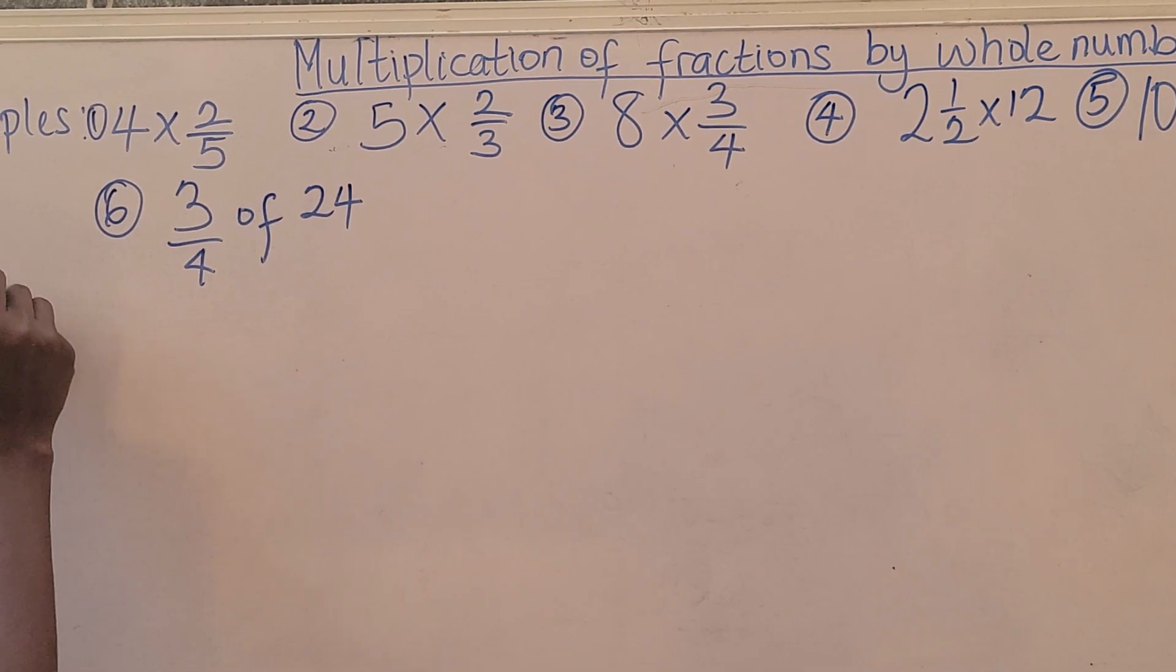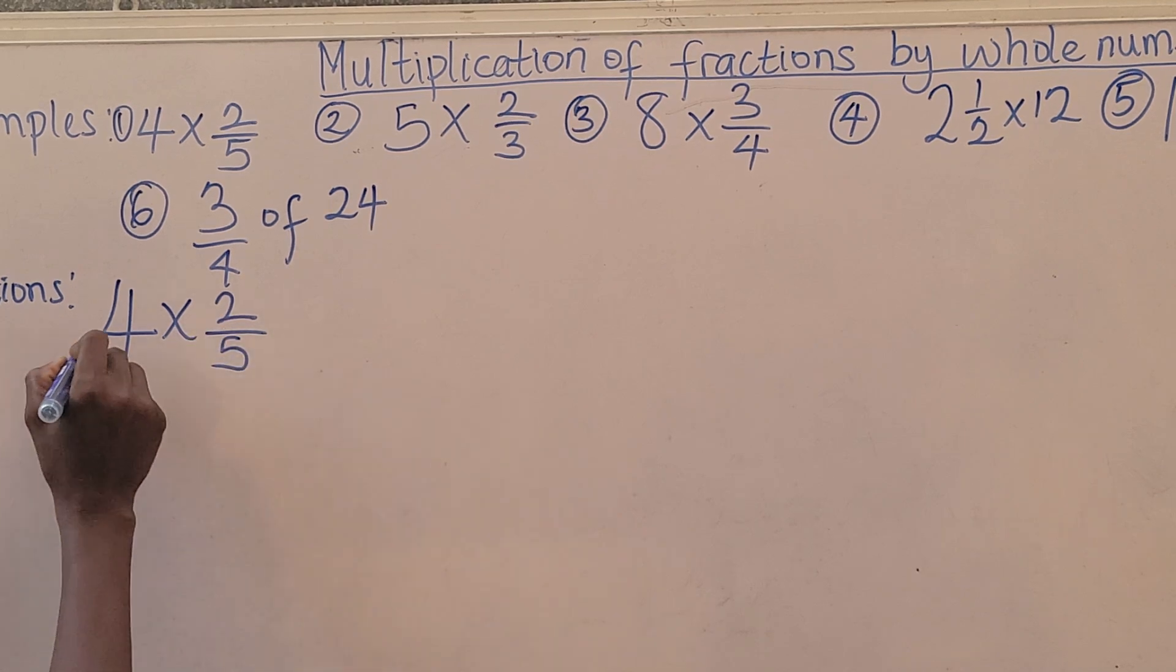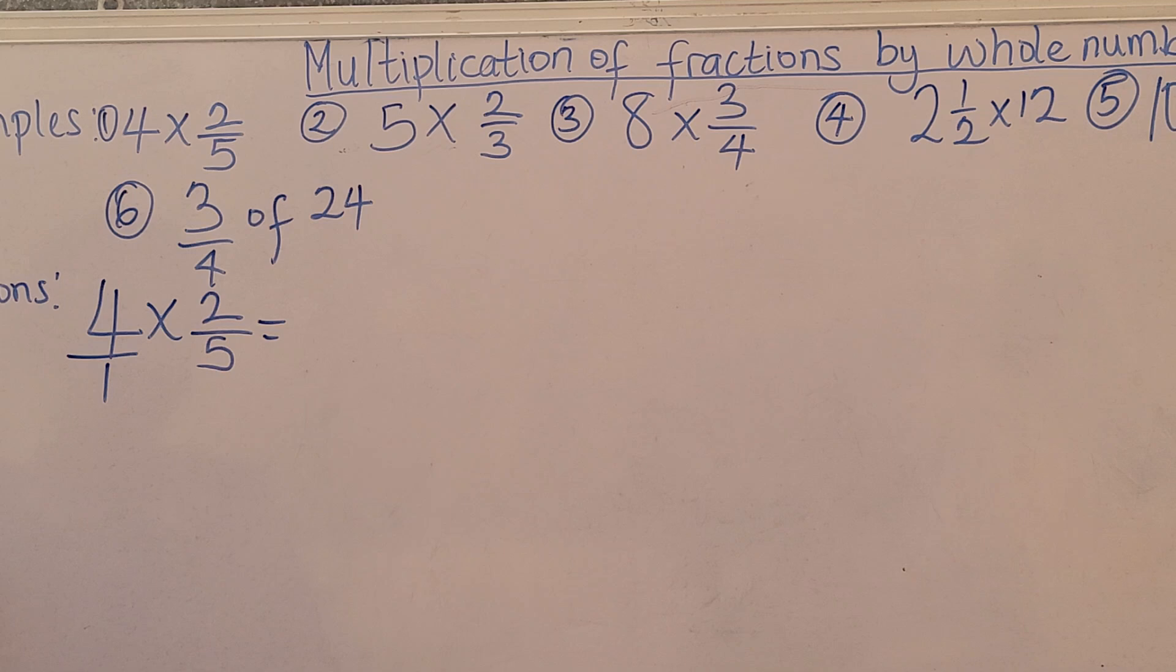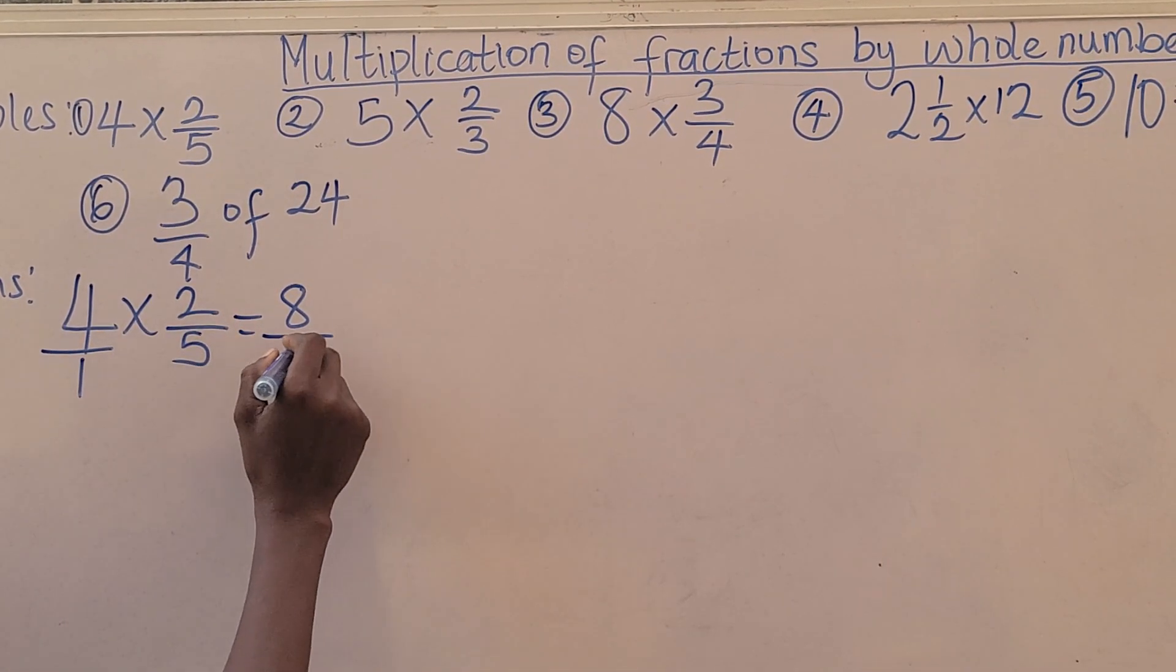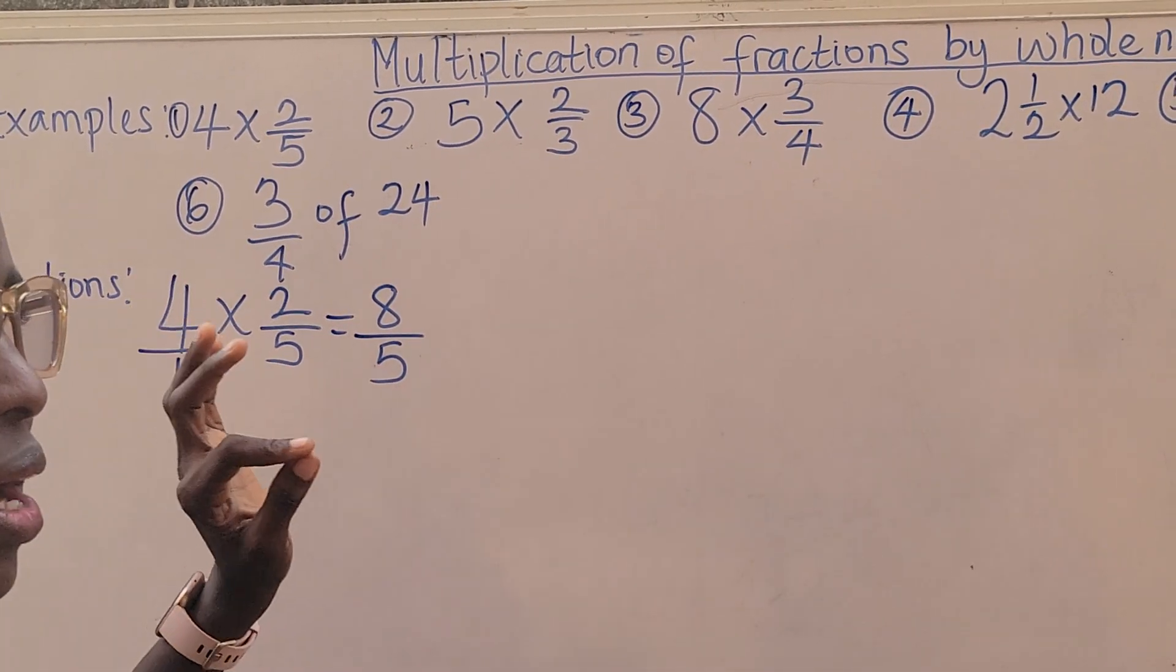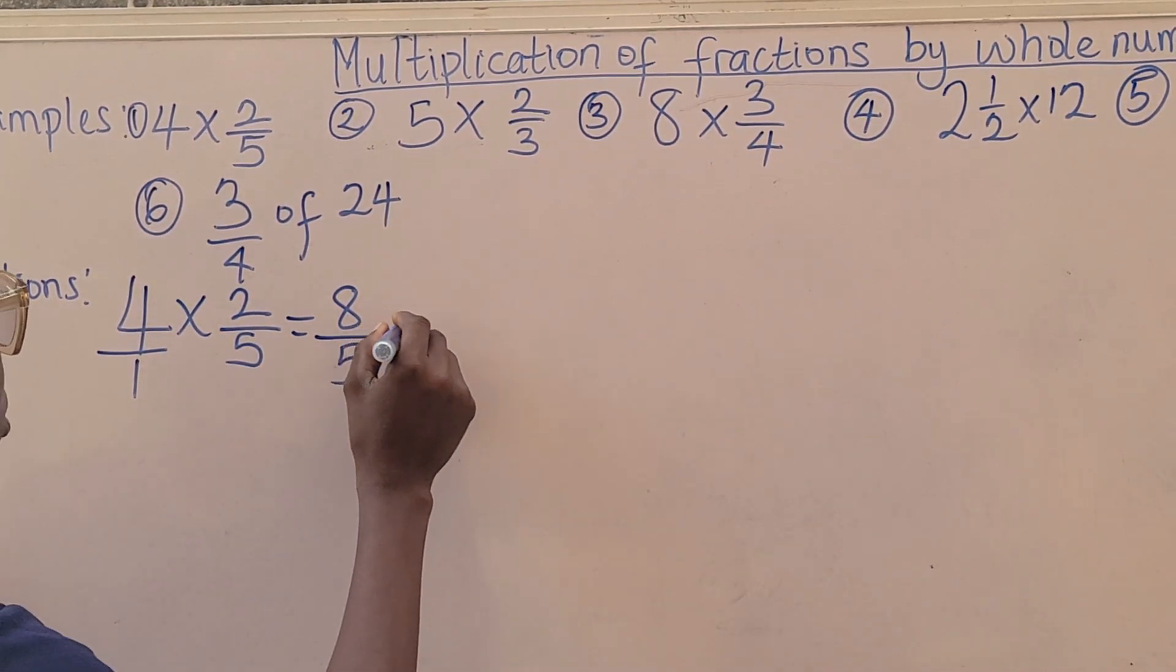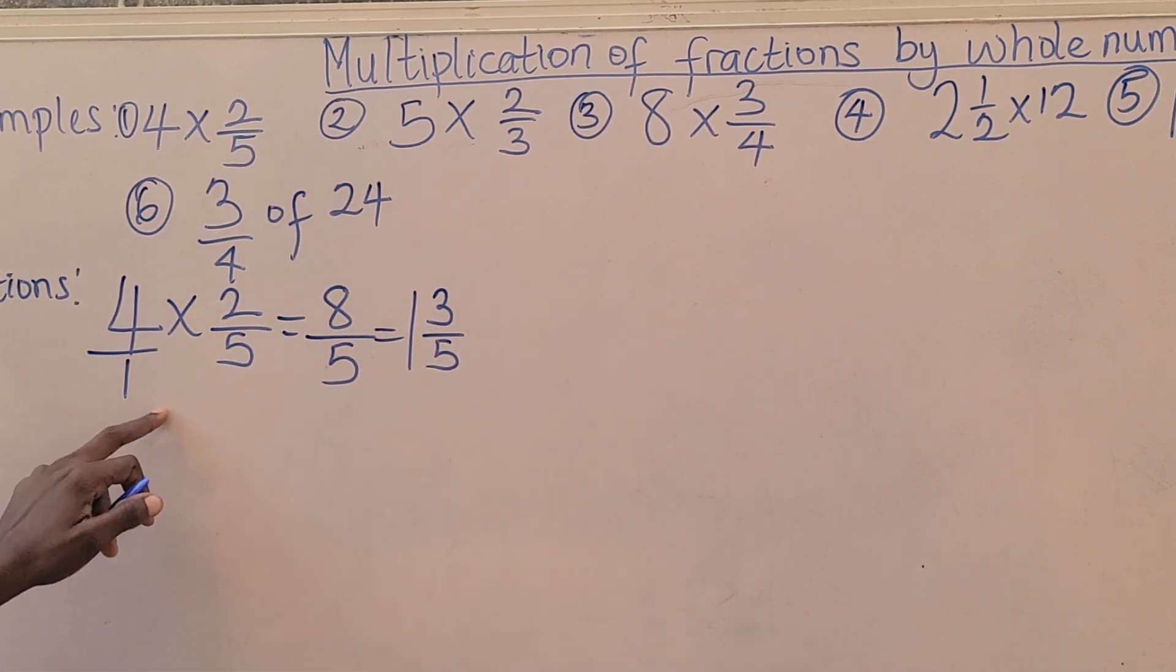Solution. We have 4 times 2 over 5. It's going to be 4 over 1 times 2 over 5. Then you multiply out. 4 times 2, 8. 1 times 5, 5. Then when you get an improper fraction, an improper fraction is a fraction in which the numerator is bigger than the denominator, just go ahead and divide. So 8 divided by 5 is going to be 1, it will remain 3 over 5. That's our final answer.